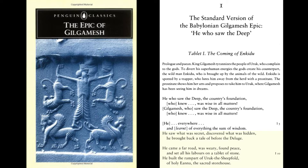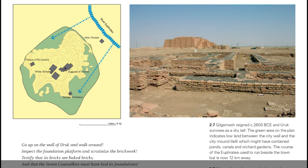'He came a far road, was weary, found peace, and set all his labours on a tablet of stone. He built the rampart of Uruk the sheepfold, of Holy Iana, the sacred storehouse.' Archaeologists believe that the Iana district in Uruk had the overlapping roles of sanctuary, palace, and garden, as well as being the heart of a city. There is a poetic reference to pure Iana's fruitful garden, which may be a sexual metaphor, as well as a complimentary remark on the temple's sacred grove.